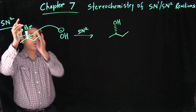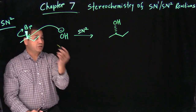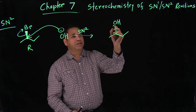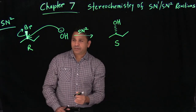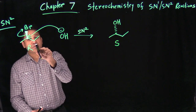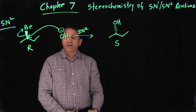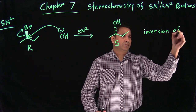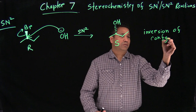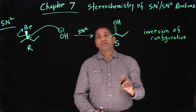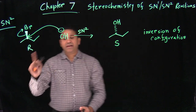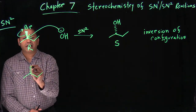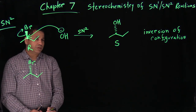The nucleophile has to go in the back because the big bromine is in the front. Looking at the stereochemistry: the starting material has priority order one, two, three — that is R. After SN2, the configuration changes to S. So in this process we reverse the stereochemistry. The starting material and the product have exactly opposite configuration — this is called inversion of configuration. If one is R, the other has to be S.